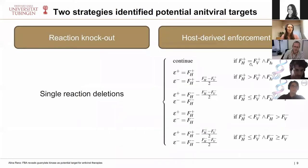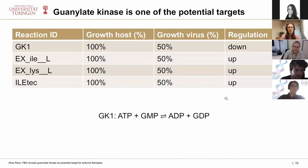We had two strategies to identify potential antiviral targets. The first was a brute-force approach of reaction knockouts — we deleted every single reaction and tried to identify knockouts that did not harm the host cell but harmed the virus biomass objective function. Another approach was host-derived enforcement using flux variability analysis to adapt upper and lower bounds of reactions, simulating not total blockages but rather inhibitions or enhancements. With these two strategies, we identified the guanylate kinase as one of the potential targets.